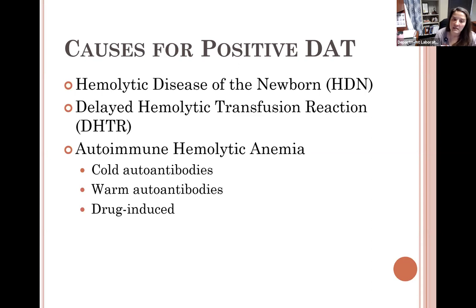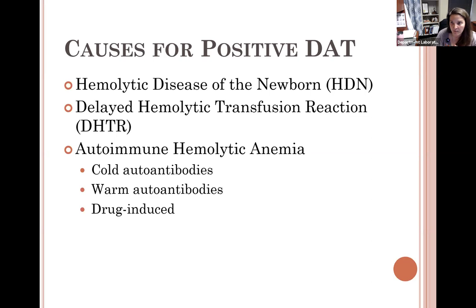Another cause is delayed hemolytic transfusion reactions. The number-one suspect IgG antibody capable of causing a delayed hemolytic transfusion reaction is the Kidd family — JKA and JKB. However, a positive DAT is not limited to delayed reactions; any type of hemolytic transfusion reaction can cause it. If you gave a patient the wrong ABO, the DAT will be positive because complement attaches to the red cell membrane.